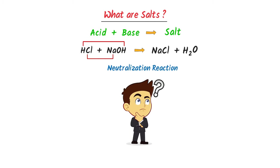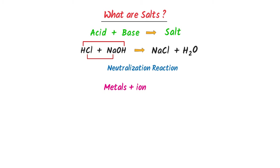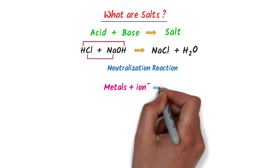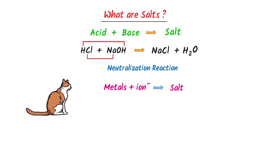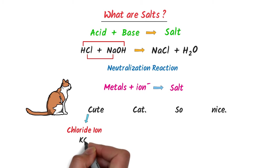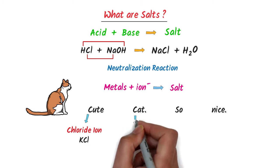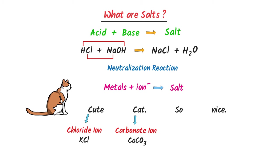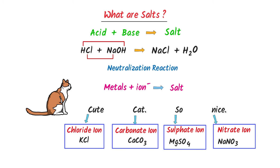This whole reaction is known as a neutralization reaction. How can we remember the important salts? Metal plus ions usually form salts. I always say 'cute cat, so nice.' So if a metal contains chloride ion, carbonate ion, sulfate ion, or nitrate ion, they are usually salts. Remember this important trick about salts.